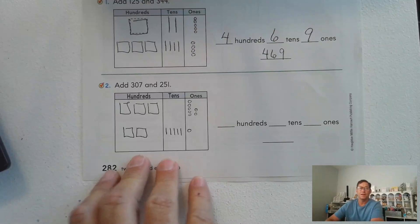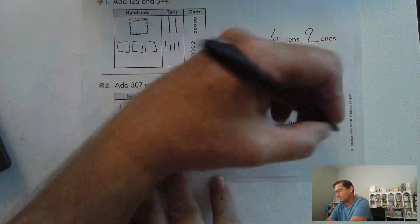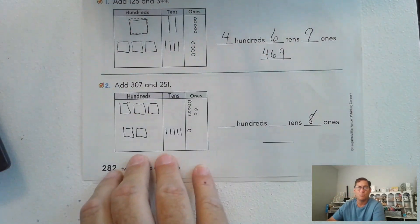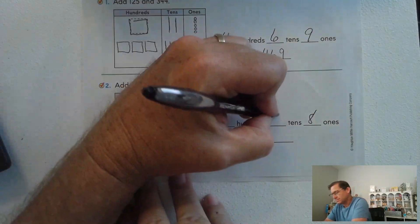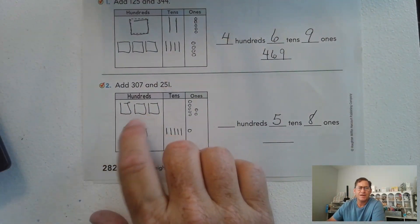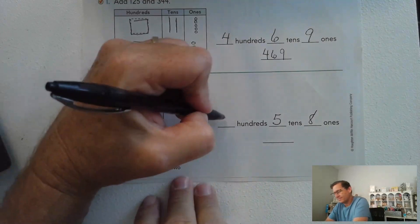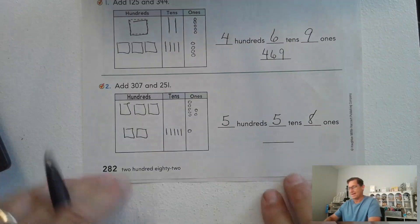All right. Starting the ones. How many ones do we have? We have seven and one more, eight ones. Five tens and zero tens, so we have a total of five tens. And we had 300 and we're going to add two more hundreds, five hundreds. So 558.